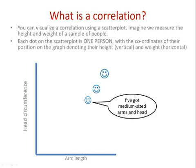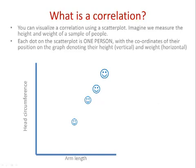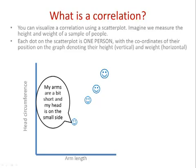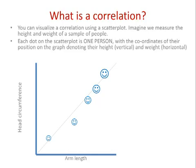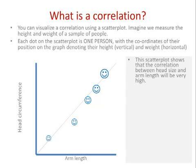Getting to the little people now — these guys have arms a bit on the short side and a head a little on the small side. Right down at the bottom we have our Hobbit, with a tiny little head and little arms. Notice that all those people fall on this diagonal, more or less — not perfectly, but more or less. That basically tells us there's a very strong correlation between head circumference and arm length: the bigger your head, the longer your arms are likely to be.